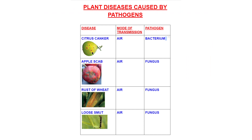Plants are also affected by pathogens. Citrus canker shows spots on a citrus plant; its mode of transmission is air and the pathogen is a bacterium. Apple scab appears as skin patches on apples, transmitted by air, and is a fungal disease. On wheat leaves, rust of wheat appears as red rusty patches. Another fungal disease is loose smut, where the spike of the wheat plant turns brown, dries away, and all the seeds are lost.